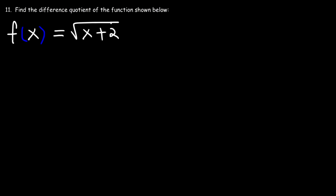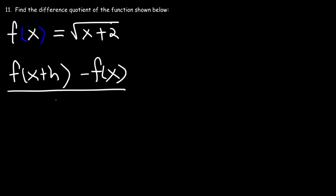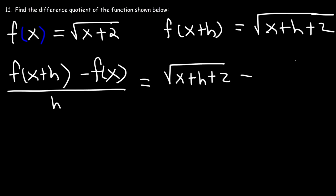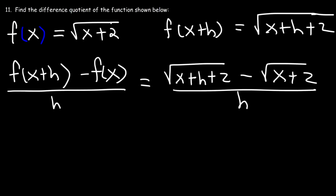Number 11. Find the difference quotient of the function shown below. The formula is [f(x+h) − f(x)] / h. To determine f(x+h), simply replace x with x+h. So f(x+h) = √(x+h+2) and f(x) = √(x+2). Now how can we simplify this expression?